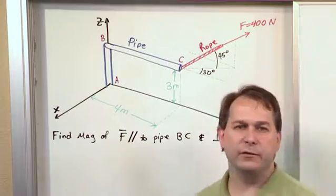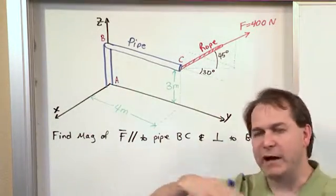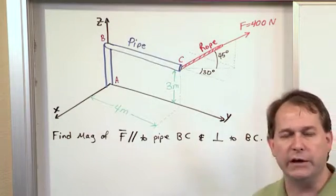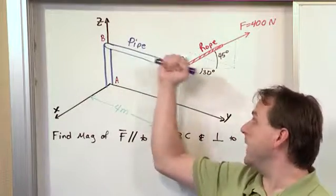This is fairly easy to visualize. If I have a pipe sticking up out of the ground like that, and I tie a rope to it, and I pull obliquely on it, some of the force is going to be transmitted parallel to the pipe, kind of dragging it this way.